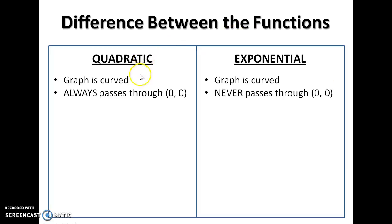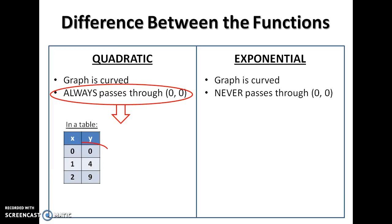So it says here, graph is curved, graph is curved. The main difference between them is that the quadratic function always passes through (0, 0), the origin. In a table of values, you would either see (0, 0), or be able to work out that there is a (0, 0).